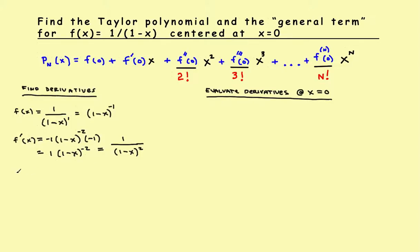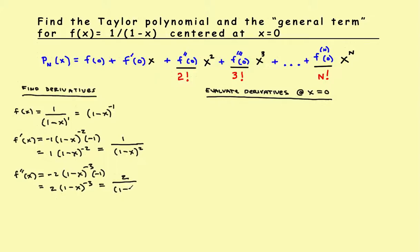The second derivative: using the chain rule again, we get negative 2 times (1 minus x) to the negative 3 power, times the derivative of the inside which is negative 1. Negative 2 times negative 1 gives positive 2, so this becomes 2 times (1 minus x) to the negative 3. Rewriting: 2 divided by (1 minus x) to the 3rd power.